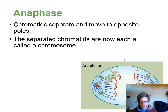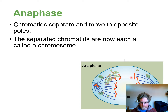Anaphase is a very short phase but very dramatic. The chromatids separate and are pulled apart along the spindle fibers. When the chromatids separate and move, you've gone from one chromosome consisting of identical sister chromatids to two separate chromosomes.